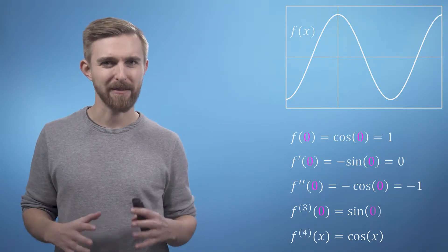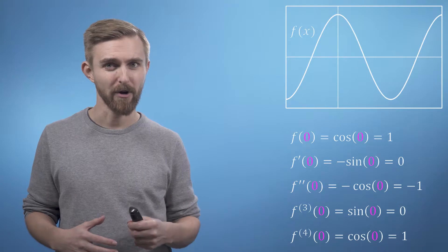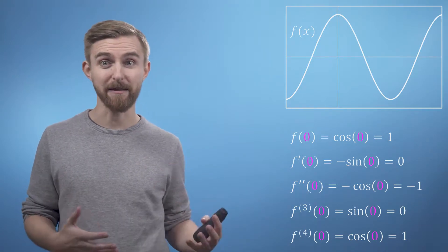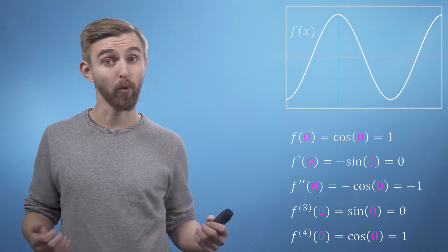If we now evaluate this derivative at the point x equals zero we see that the cosine terms are either one or minus one and the sine terms are all zero.